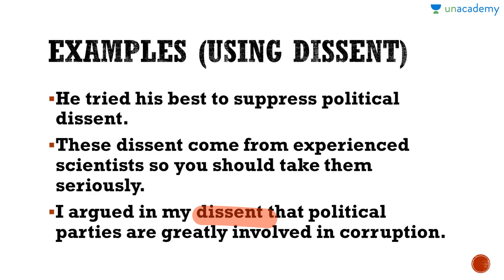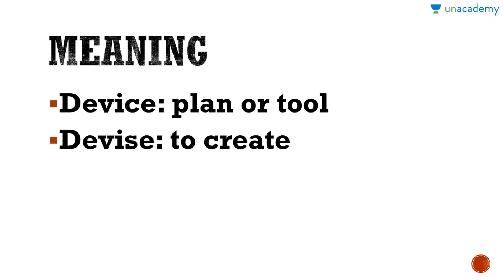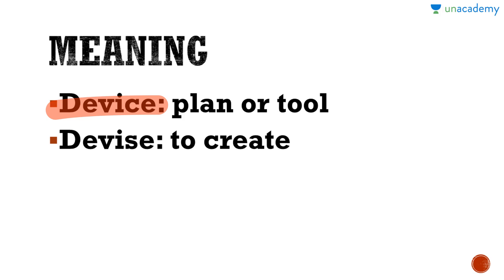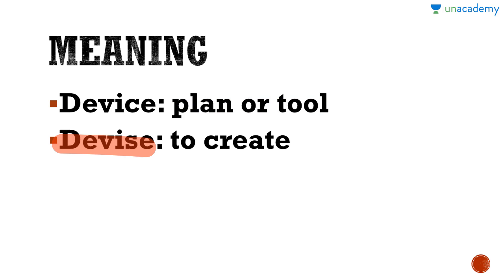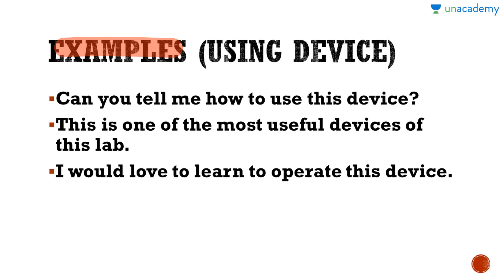I hope the difference between both of these words is now clear. Now we will discuss the meaning of DEVICE and DEVISE. DEVICE is a quite common word which means a plan, a tool, or sometimes a machine. DEVISE means to create.